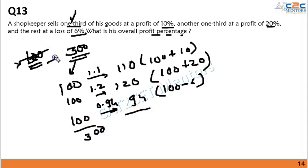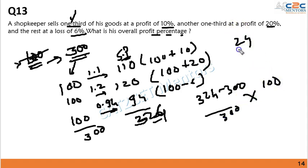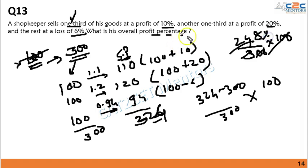Adding the selling prices: 110 + 120 + 94 = 324. The cost price was 300. Profit percentage = (324 − 300)/300 × 100 = 24/300 × 100 = 8% profit. The main crux of this sum is assuming the cost price to be 300 so that calculations are easier and the zeros cancel cleanly.